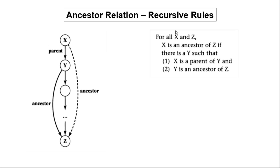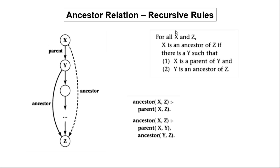For this statement we can write the rule as shown here. It says that x would be an ancestor of z if x is the parent of y — that is the first condition — and the second condition is that y is an ancestor of z. As you can see, to define the ancestor relation, in the body we again use the ancestor relation, and hence it is called a recursive rule.